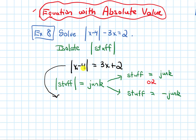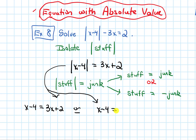For our equation, when I get rid of the absolute value, x minus 4 either equals 3x plus 2, or x minus 4 equals the negative of 3x plus 2. Notice I put parentheses around the 3x plus 2 — that's really important, otherwise I'll forget to distribute the negative to all those terms.